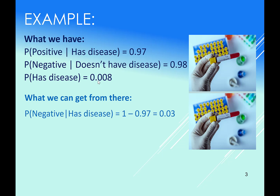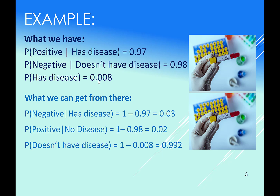We can take the complements of each of those by doing one minus each one. So if somebody has a disease, the odds of them testing negative will be the leftover 3%. If somebody does not have the disease, the odds of them testing positive will be the leftover 2% when we do one minus 0.98. And if 0.008 is the probability of somebody having the disease, then 0.992 is the probability of people not having the disease — that's 99.2% of the population.